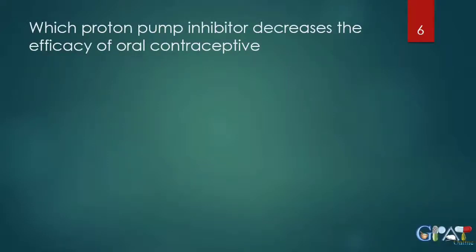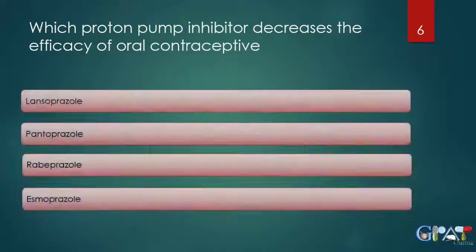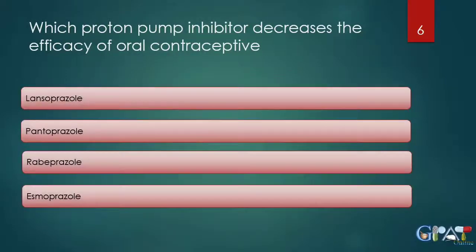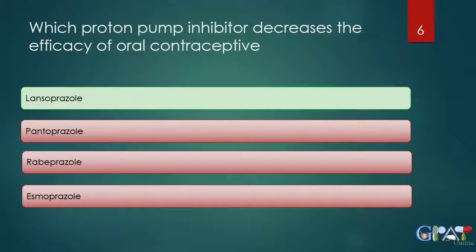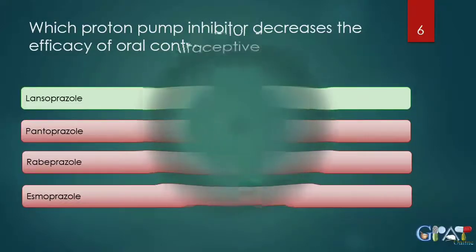Which proton pump inhibitor decreases the efficacy of oral contraceptives? When a proton pump inhibitor and oral contraceptive are taken together, it decreases the efficacy of the oral contraceptive. Pantoprazole, rabeprazole, and esomeprazole do not have this ability, but lansoprazole does decrease the efficacy of oral contraceptives. The answer is lansoprazole.